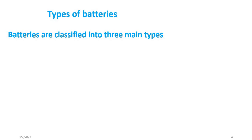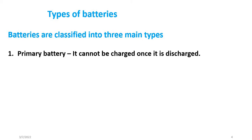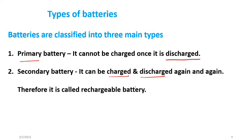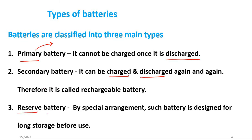Now we will see the different types of batteries. It depends on whether we can charge it or not. One is the primary battery, which cannot be charged again. Once it is discharged, the battery is finished — you cannot recharge it. The secondary battery can be charged and discharged again and again, like a mobile battery. The third type is the reserve battery, which has a special arrangement with two different partitions that are kept separate.